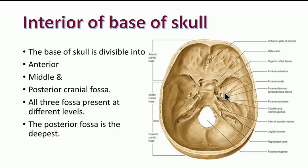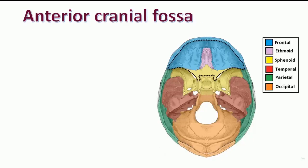Now, we will try to understand about the features on the floor, especially the cranial fossas, one by one. To start with the anterior cranial fossa, you are able to see here — the anterior cranial fossa mainly lodges the frontal lobe. The frontal lobe of the cerebrum is actually resting on this anterior cranial fossa.